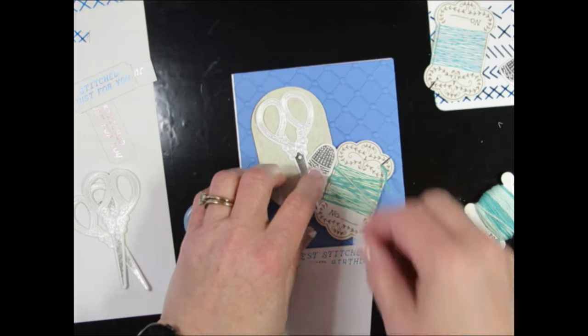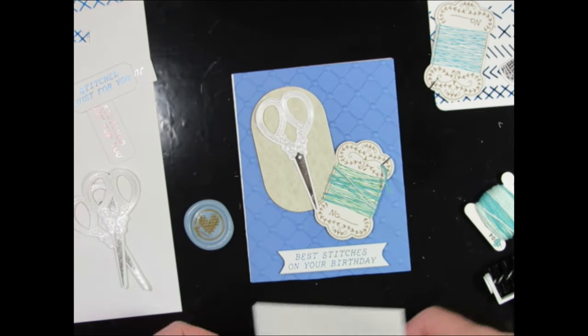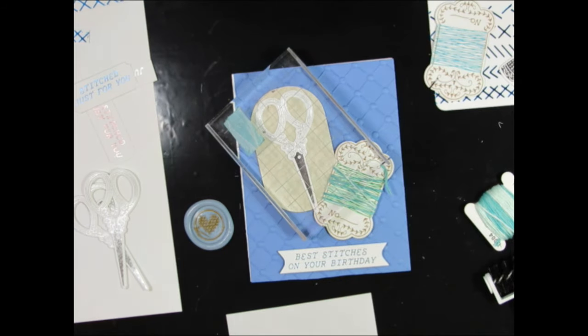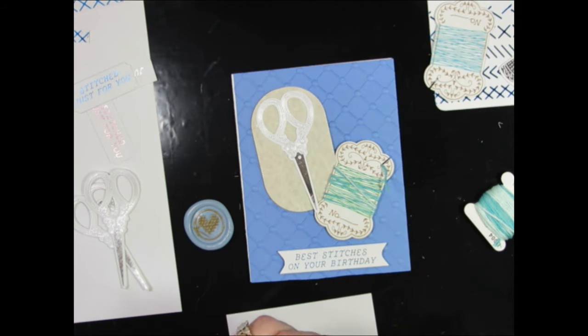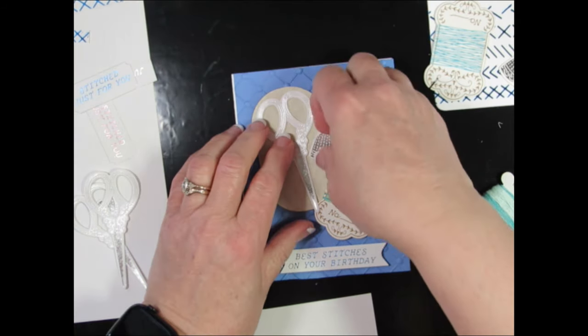Just going to use an acrylic block on top of the scissors so that they will adhere properly and securely. I place two foam dots on the back of the thimble.